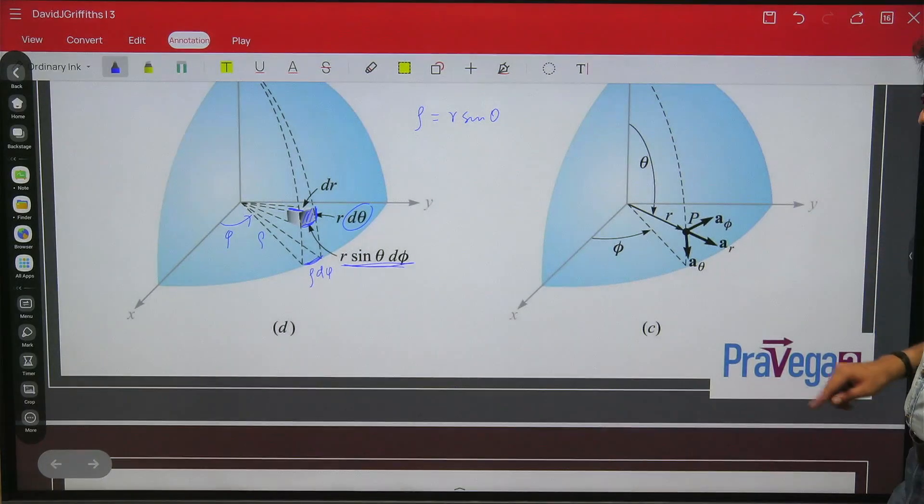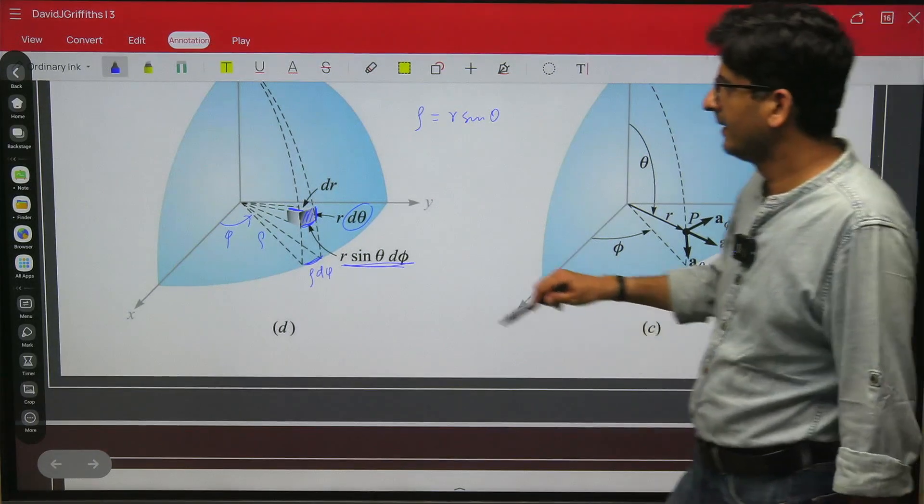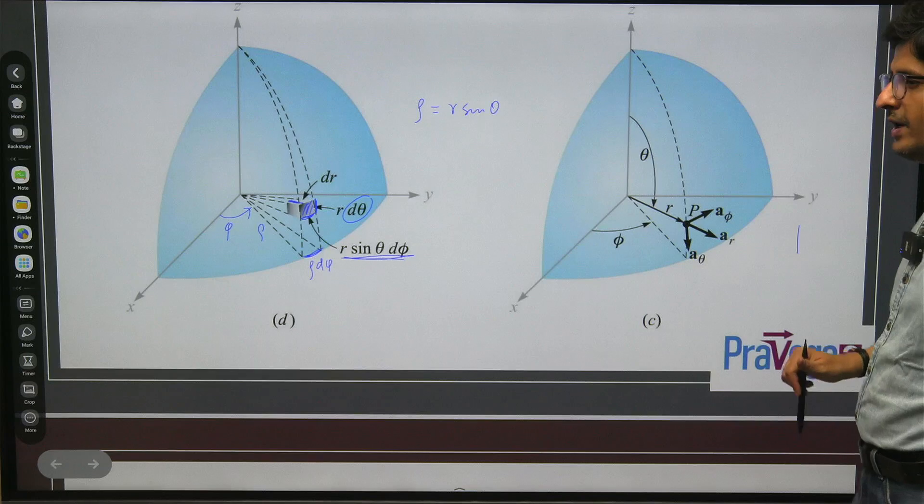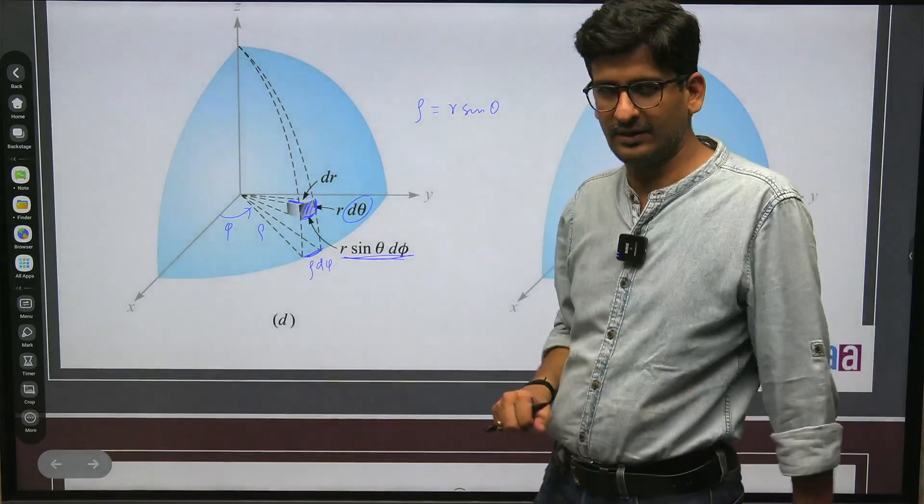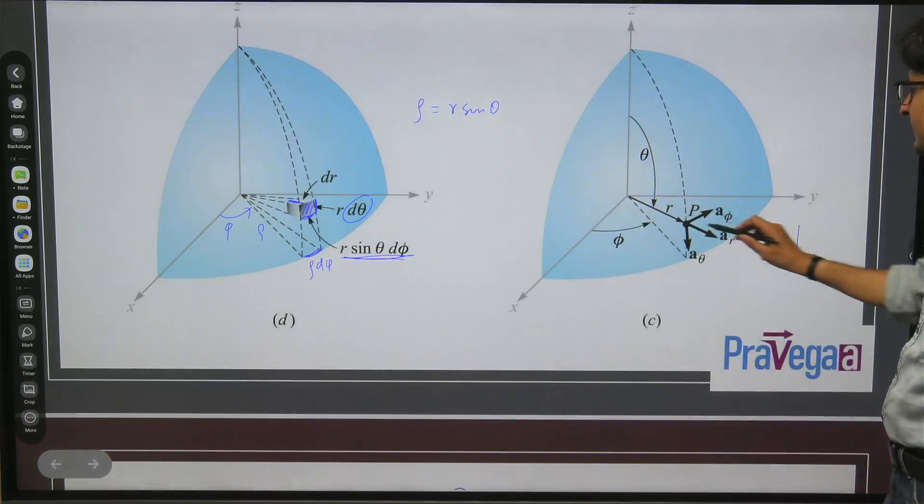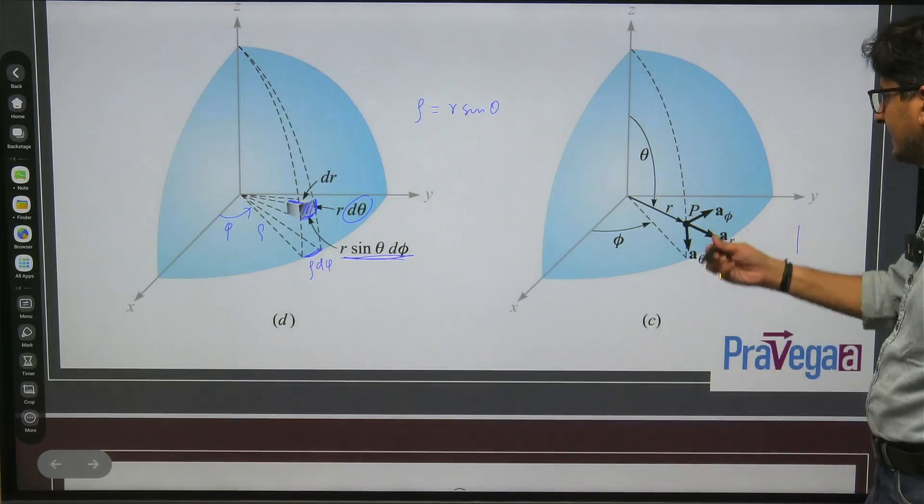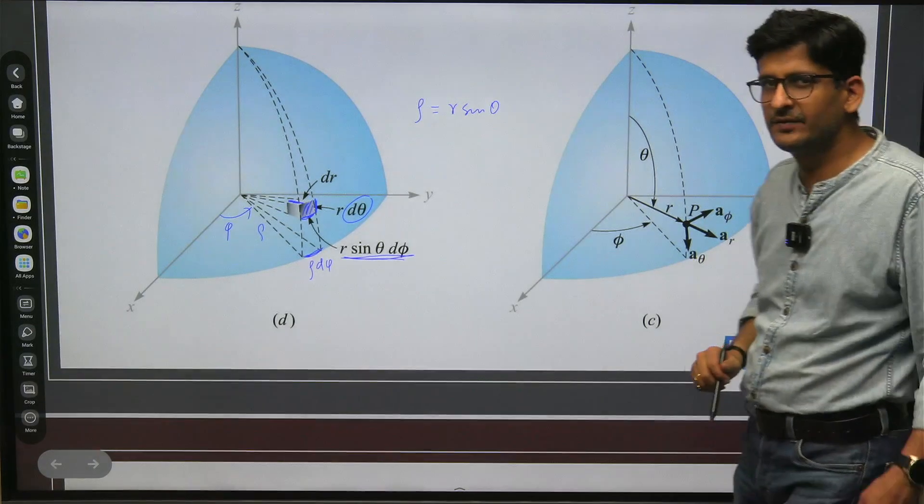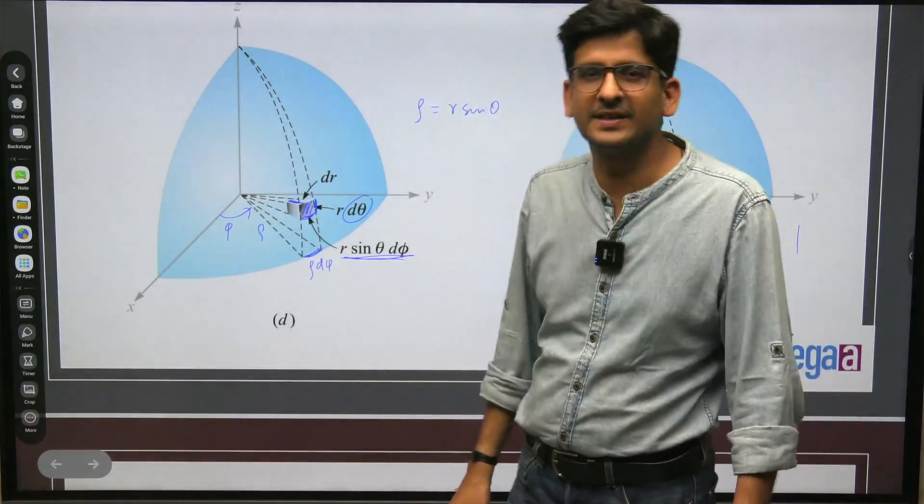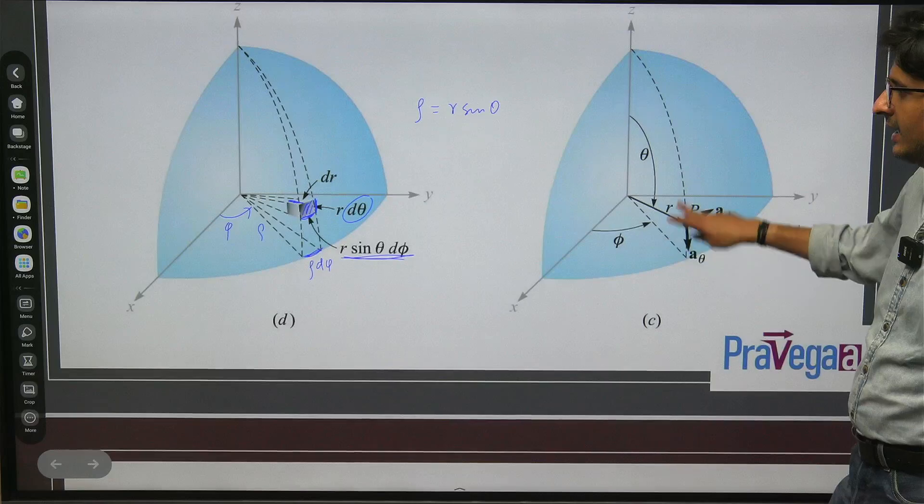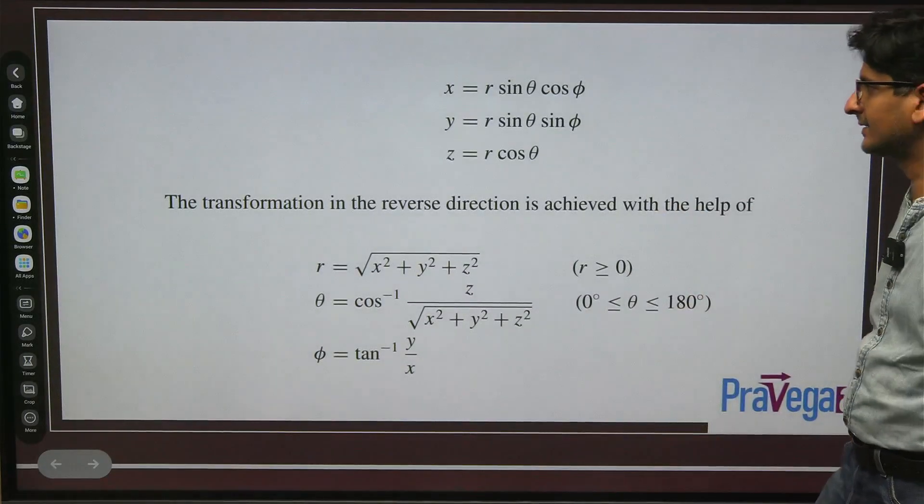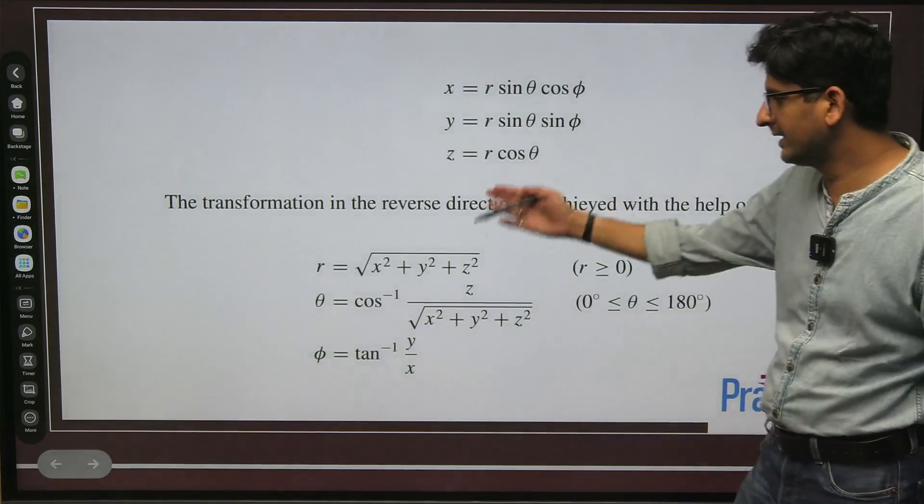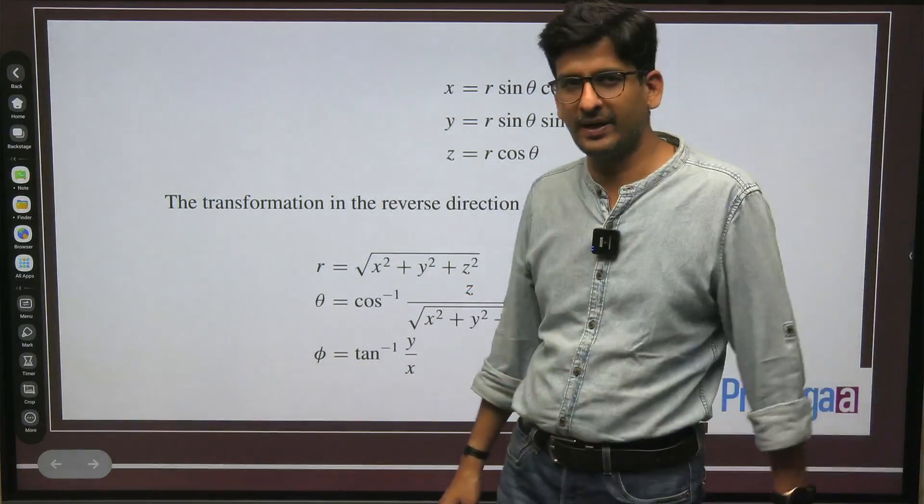Now, the unit vectors, which are very important. Even in CSIR NET exam, something related to unit vectors was asked. Unit vector is in the direction of increasing in that vector. For example, r increases in this direction, so this is r cap. Phi increases in this direction, this is phi cap. Theta increases in this direction, so this becomes theta cap. These are the directions in which that particular vector increases fastest. So that becomes the unit vector. And now you can see x can be written as r sin theta cos phi, y can be written as r sin theta sin phi, and z can be written as r cos theta. All these things can be written in a very simple geometric manner.